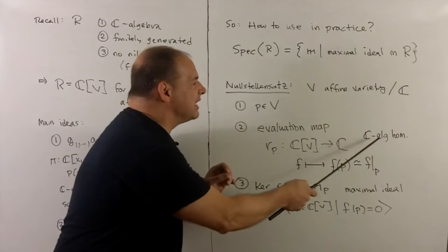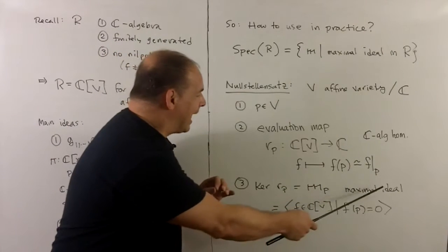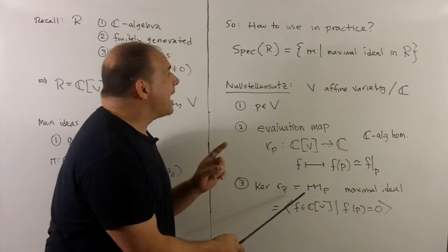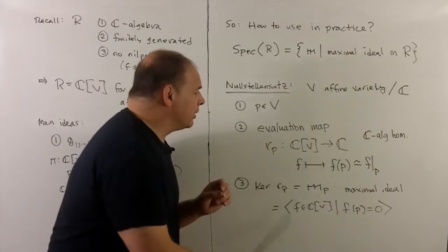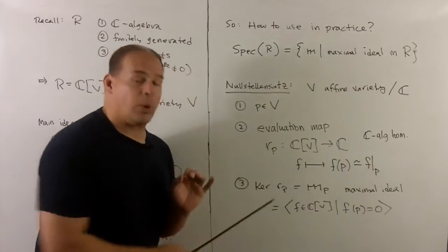So we have an evaluation map. Evaluation is going to be a C-algebra homomorphism. So the kernel is going to be a maximal ideal. And so that's how maximal ideals get identified with points, going in the direction starting with points going to ideals.